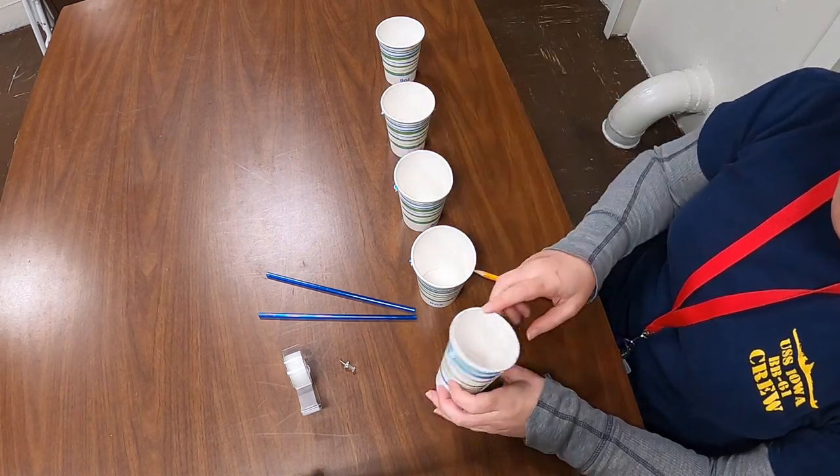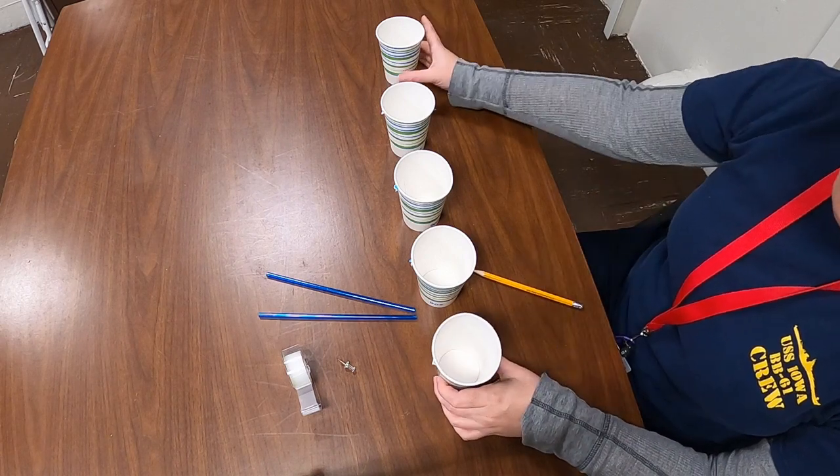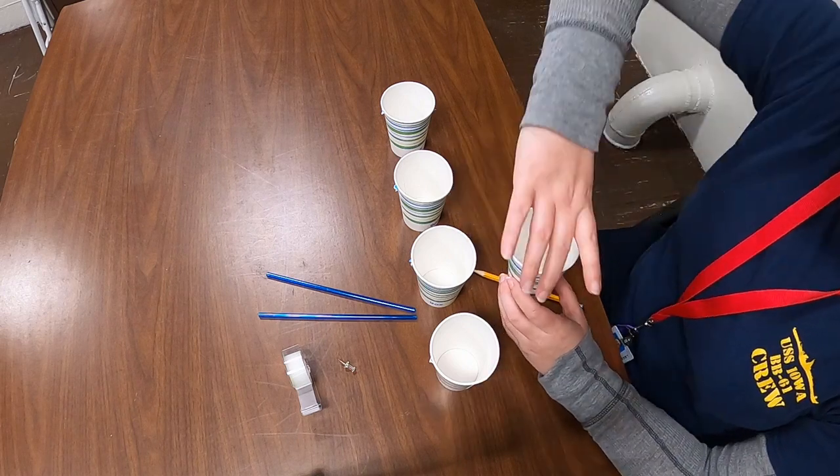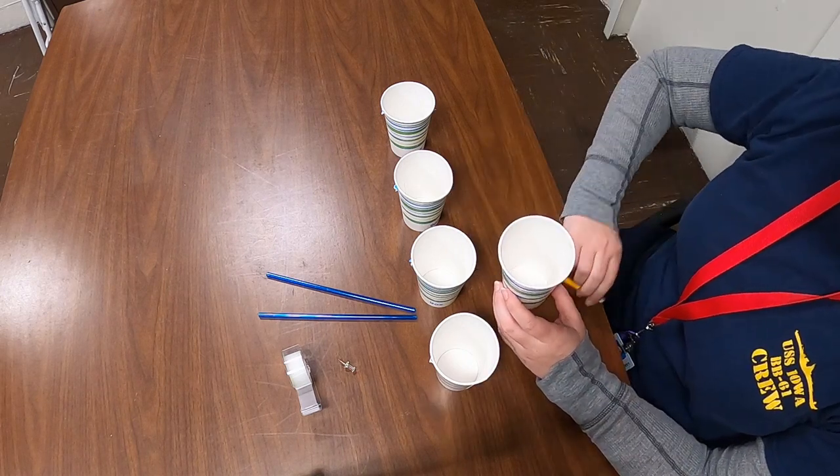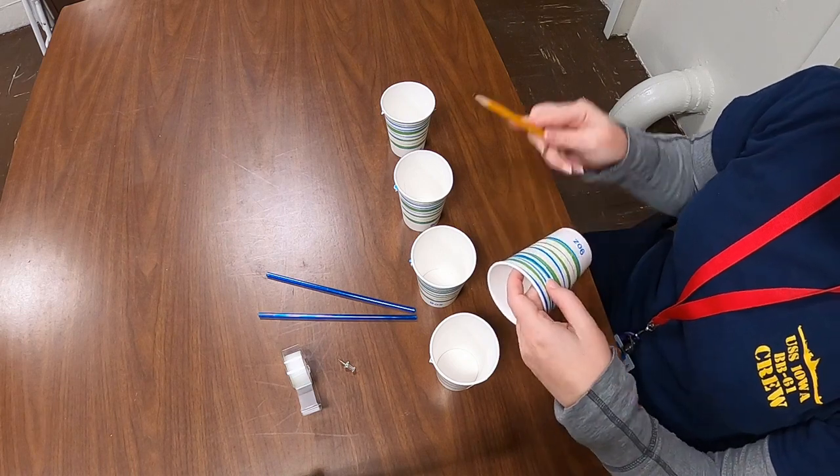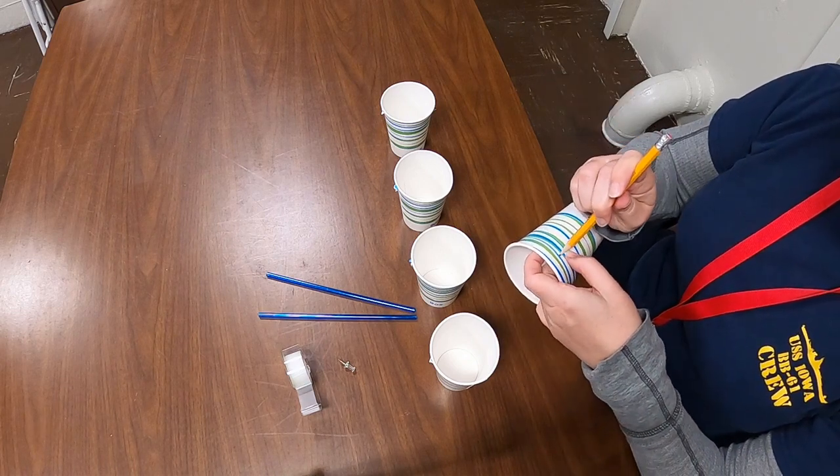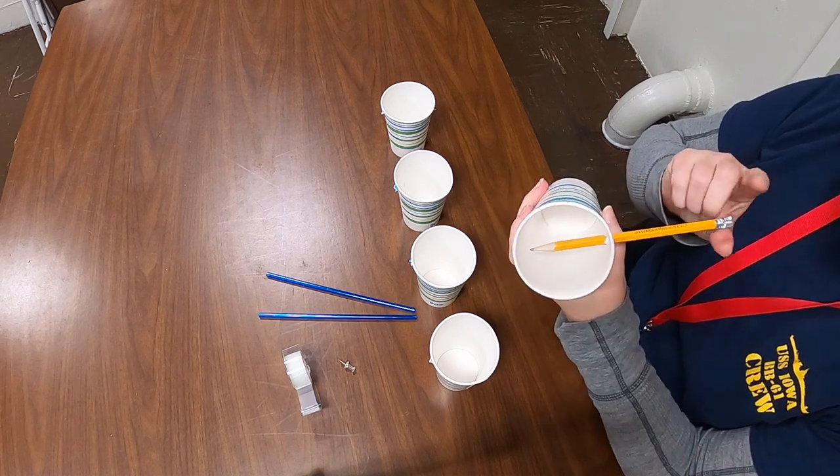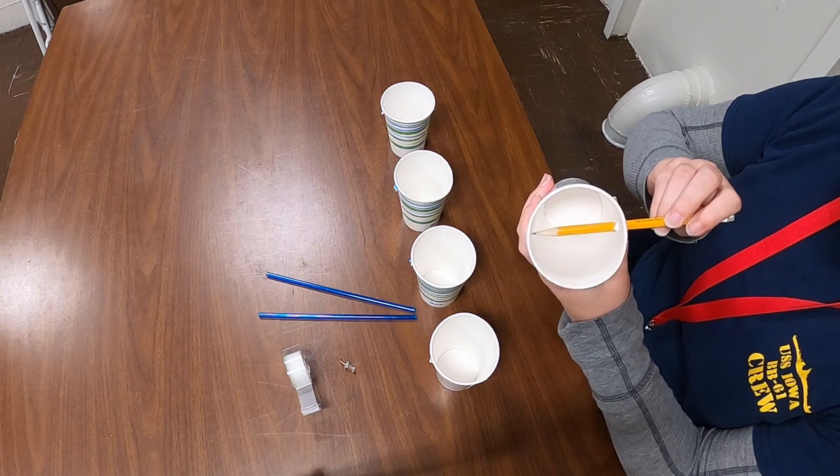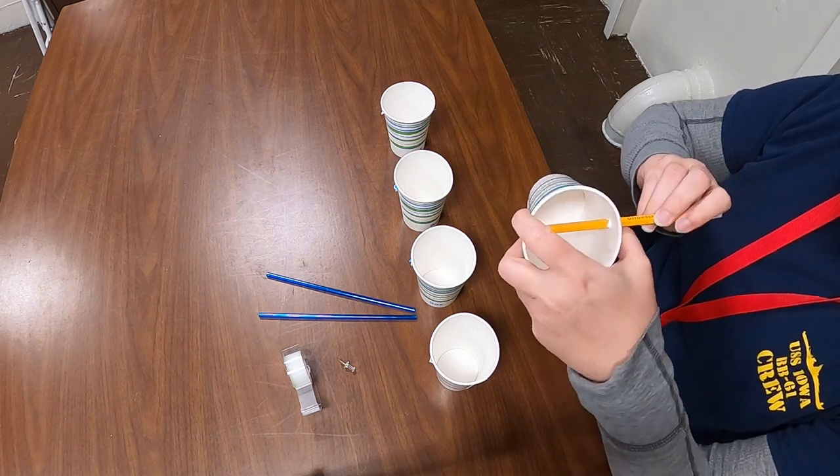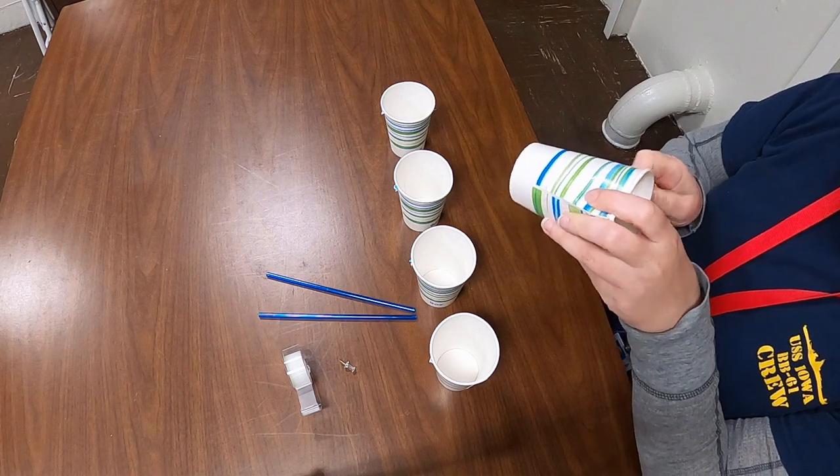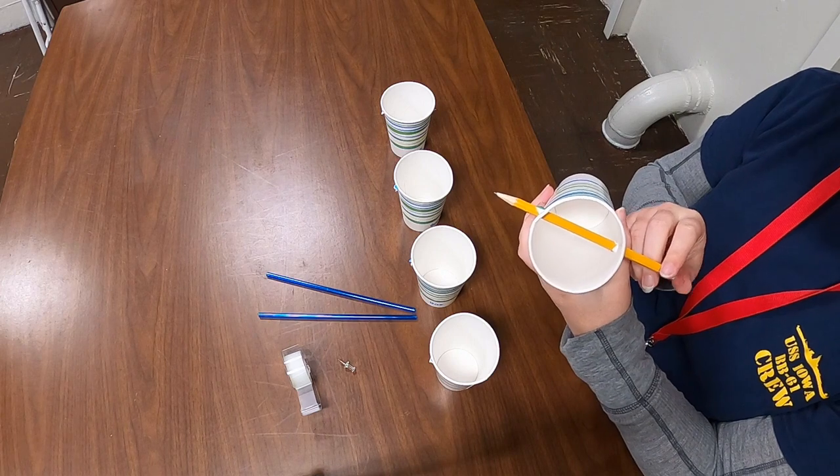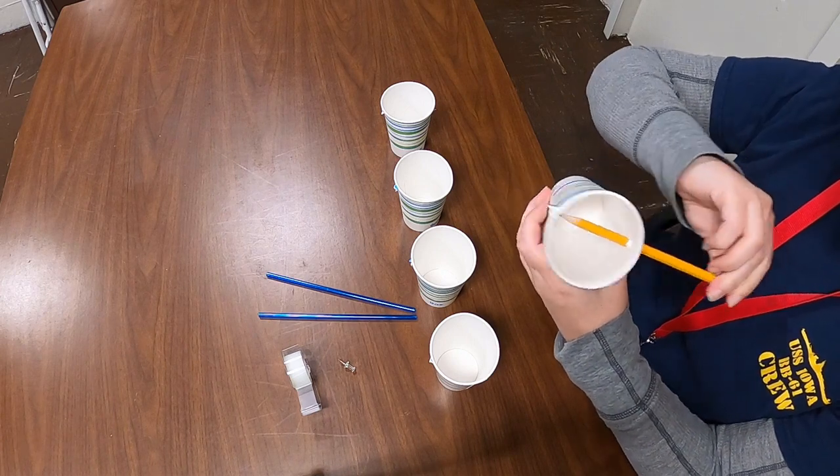So we have our four cups that all have one hole in them each. For our fifth cup we're actually going to put four holes in it, two directly across from each other. Starting from the outside of the cup I'm going to press and poke a hole through and then leaving my pencil in the cup I'm going to push it straight across through the other side of the cup. So it should be relatively straight and go clear through.